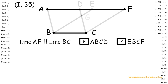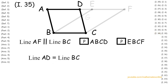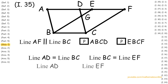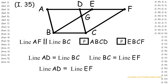Since we have parallelogram ABCD, by Proposition 34, line AD is congruent to line BC. And with parallelogram EBCF and Proposition 34, line BC is congruent to line EF. With these two statements, we apply Axiom 1 to attain that line AD is congruent to line EF.